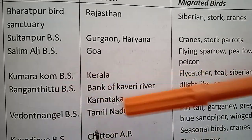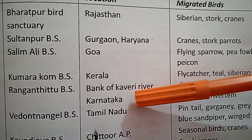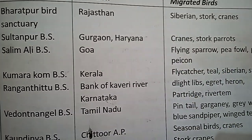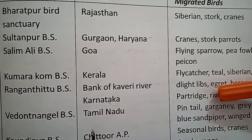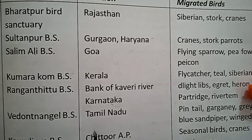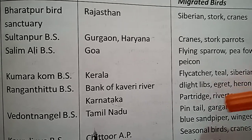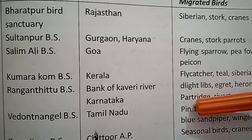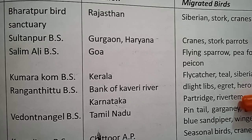Ranganathittu Bird Sanctuary, situated on the bank of the Cauvery River in Karnataka. The migratory birds here include dialect leaps, great herons, and partridges.